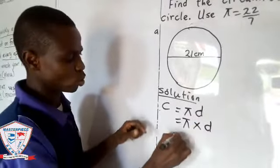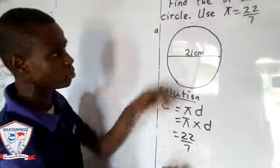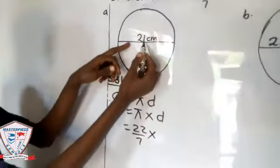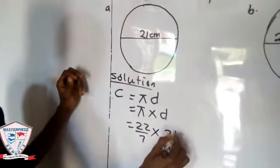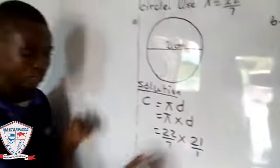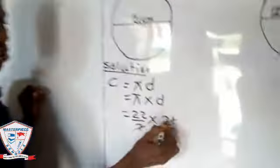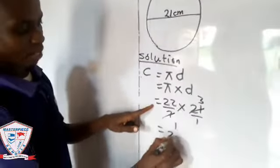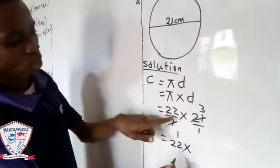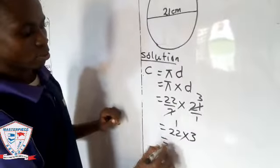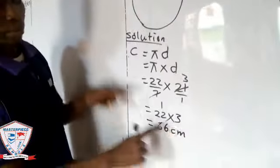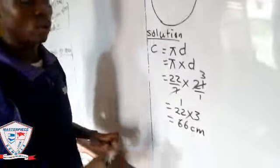You know π = 22/7, so you say 22/7 according to the instruction times what? What is our diameter? 21 centimeters, that's 21/1. So 7 here, 1 here, 7 here, 3 - then you have 22 × 3, which gives you 66 centimeters. You don't put square because it is circumference you are looking for.